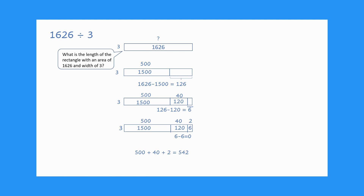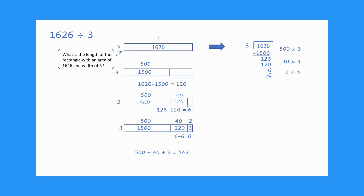Building on the open area model to make sense of division can help students make sense of the standard symbol used for division. Let's look at the partial quotients algorithm and connect it to the open area model. When finding partial quotients, we think about what times 3 will be close to 1600. 500 times 3 equals 1500. We take three groups of 500 from 1626 to get 126. Next, 40 times 3 equals 120. We take three groups of 40 from 126 to get 6. Finally, 2 times 3 equals 6. We take three groups of 2 from 6 for a remainder of 0. Look at the connections between the area model and the partial quotients.